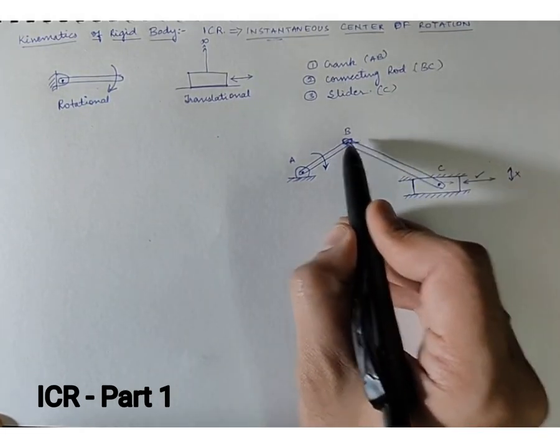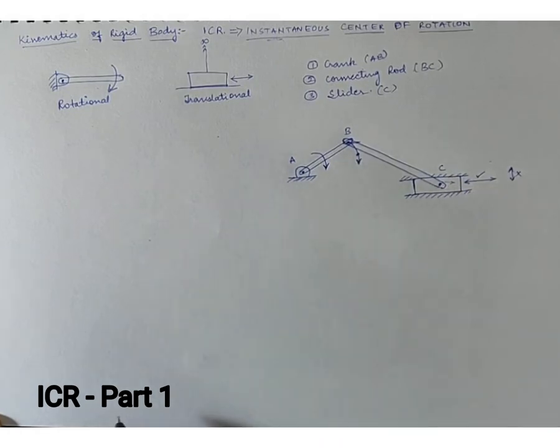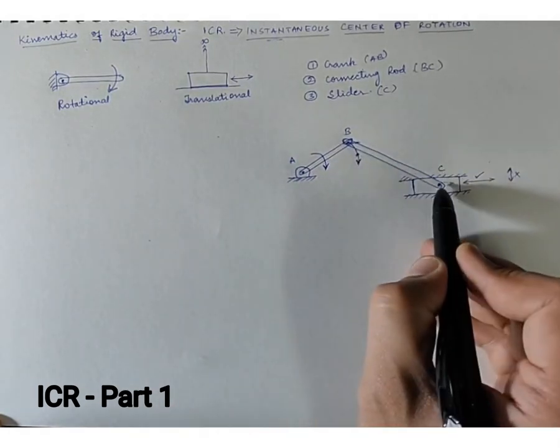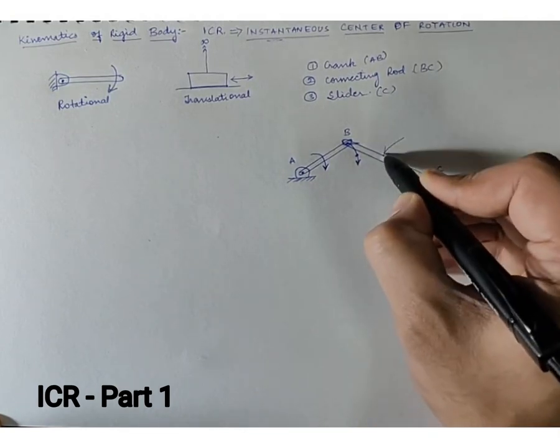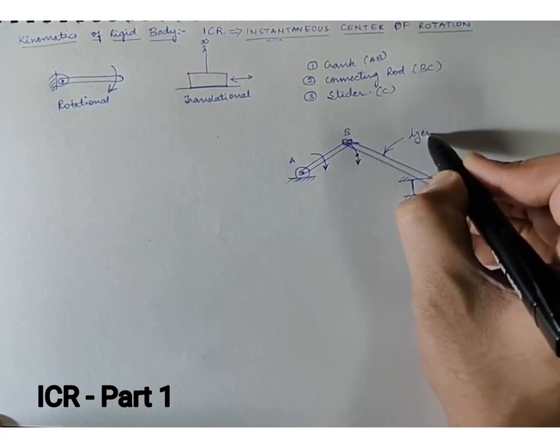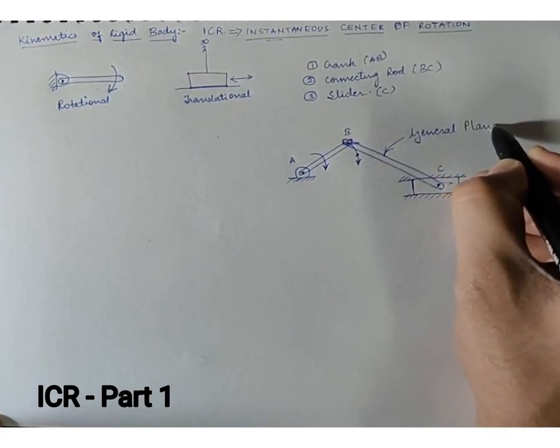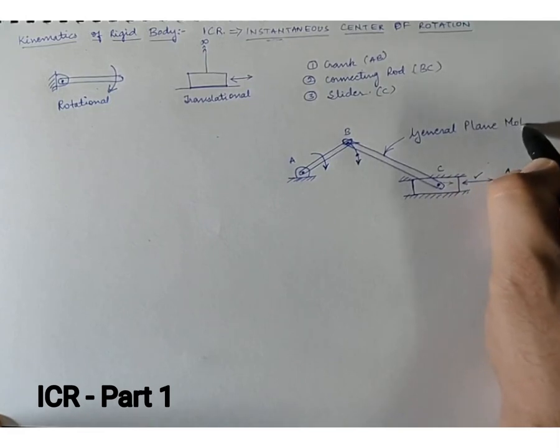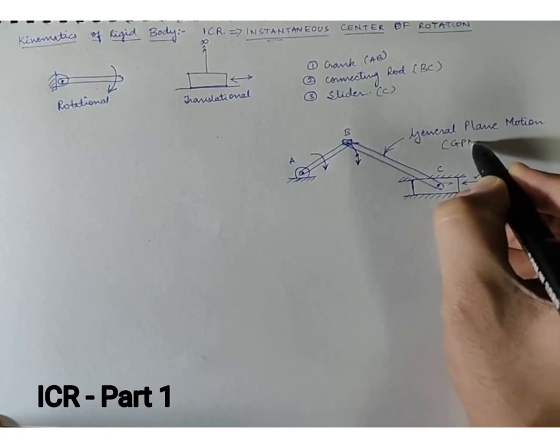Rotational plus translational motion over here gives a new type of motion which we call general plane motion. This is called general plane motion, and we generally denote it by GPM motion.